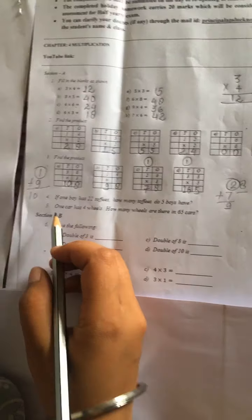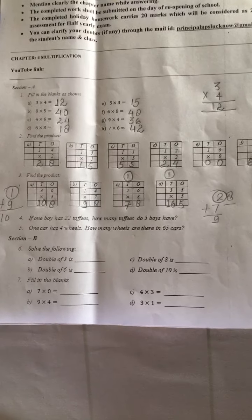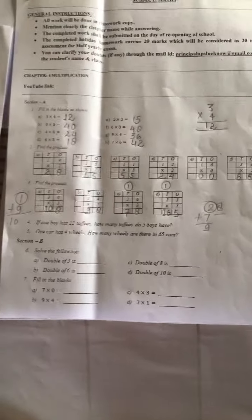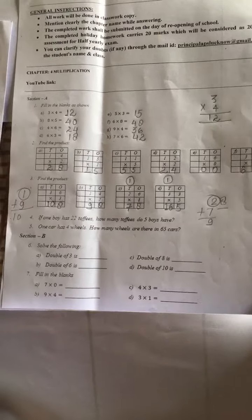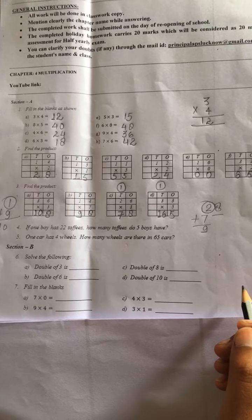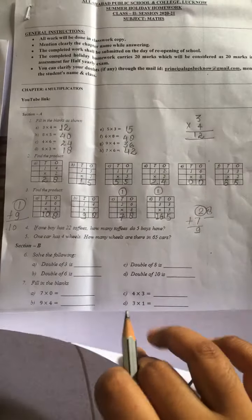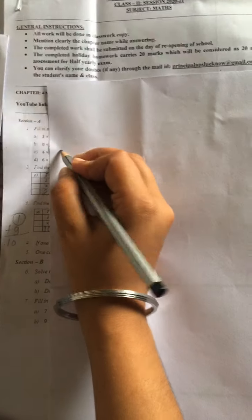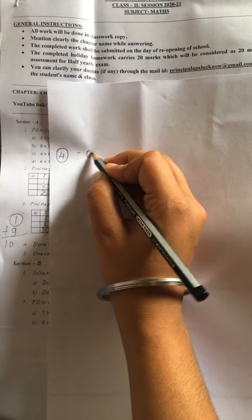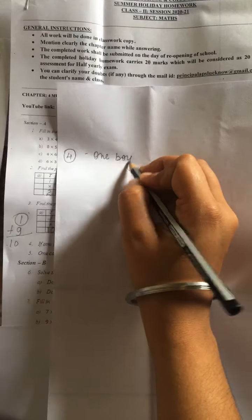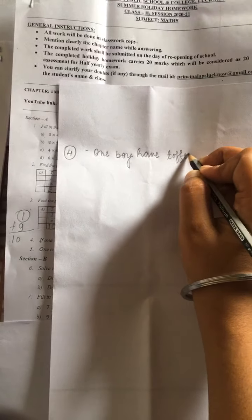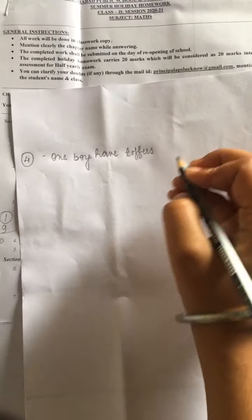Now question number 4. If one boy has 22 toffees, how many toffees do 5 boys have? 1 bachche ke paas, 1 ladke ke paas 22 toffees hain. So 5 boys ke paas kitni toffees honge? To solve karenge. Question number 4. 1 boy have 22 toffees. 5 boys have toffees, how much?